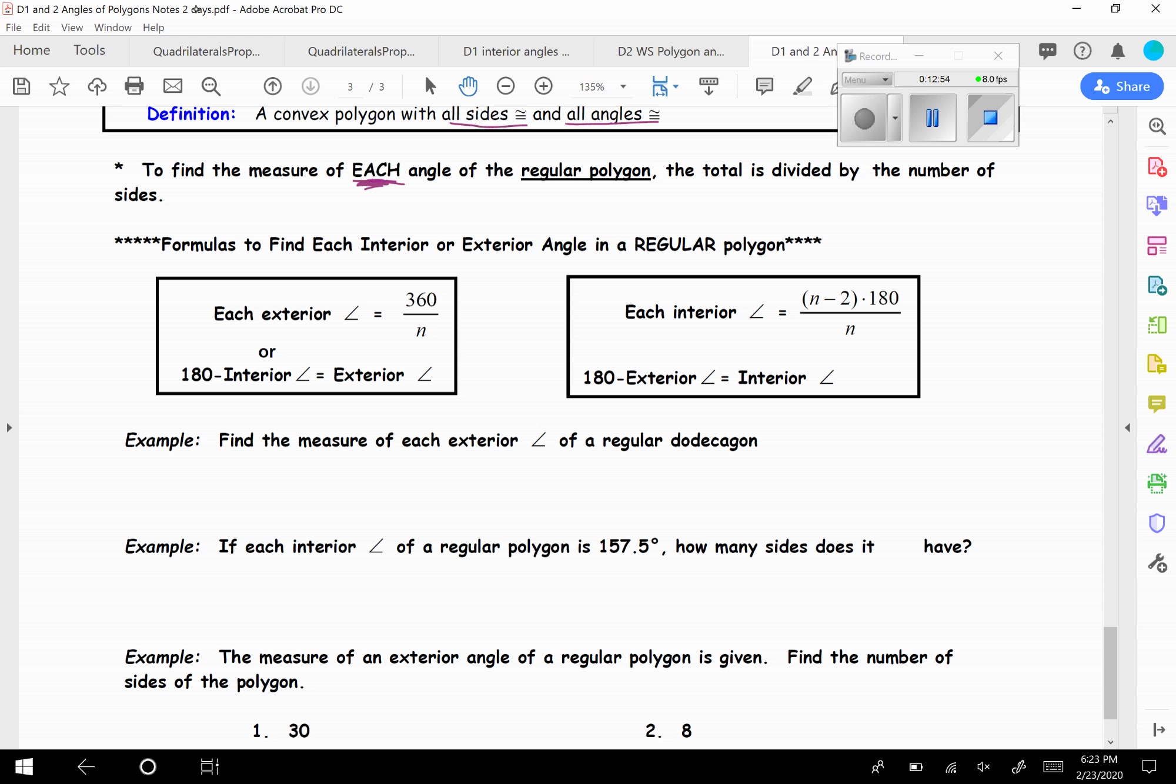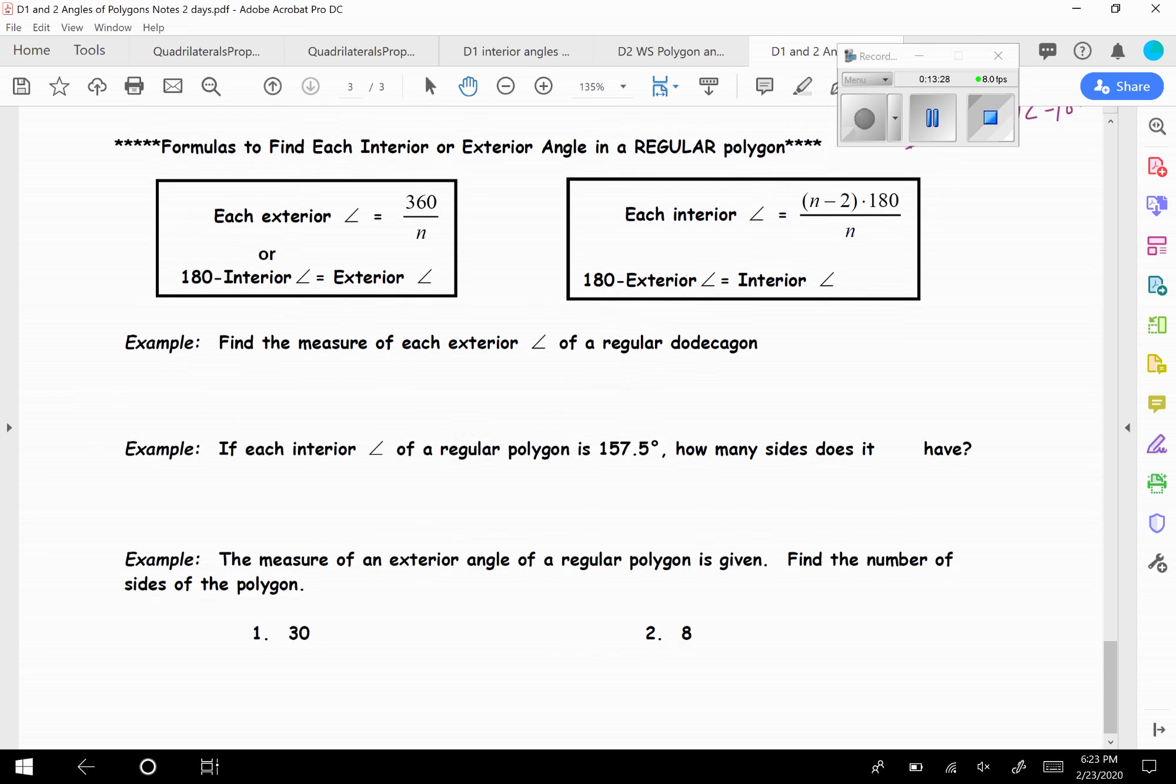So how these formulas look. For exterior, remember the total for exterior is 360. We'll just divide that by N. And that will give you one exterior angle. And then interior. Remember the total is N minus 2 times 180. We'll just divide that by N. And that will give you the measure of one interior. And if you'll notice down here in the bottom of each box, they have 180 minus the interior angle is equal to exterior, or 180 minus the exterior is equal to the interior. And that's because one interior plus the exterior, they have to add up to 180, because they're going to make a straight line.